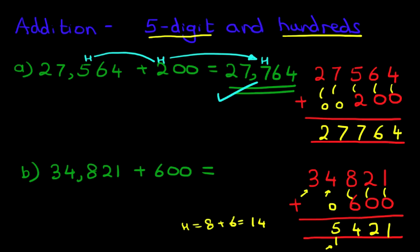The tens, we've got 3 plus 0. The answer is 3. So our answer is 35,000. Let's put a comma. 421.